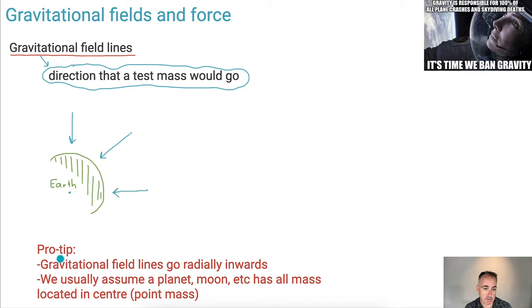Now, the gravitational field lines, they do go radially inwards. That means they go in lined up to the radius here, towards the center. And what we're normally going to do, we're normally going to assume that a planet, or a moon, or a satellite, or a star, we're going to assume that has all the mass located at the center. So we're going to assume it's like a point mass.